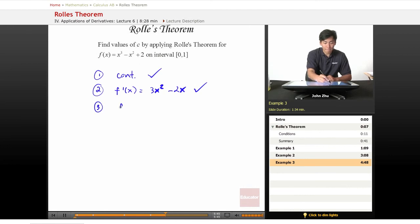Now, three. f of a must equal f of b must equal 0. So, f of a, which equals 0 cubed minus 0 squared plus 2 equals 2, which does not equal 0.